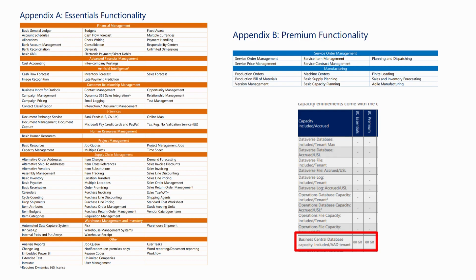With Essentials you get everything with the exception of Service Order Management and Manufacturing. On the screen you can see all the modules included with Essentials. The only difference between Essentials and Premium is that with Premium you get all the Essentials functionality plus the modules for Service Order Management and Manufacturing. There are no other differences — you don't get any additional storage or a different experience; it's purely functionality that differentiates the two.